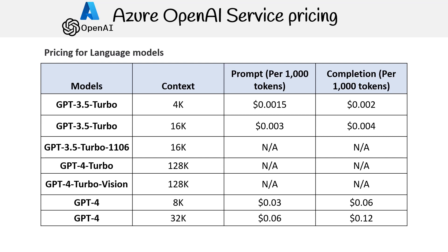GPT-3.5 Turbo 1106 with a 16k context has no available pricing. GPT-4 Turbo and GPT-4 Turbo Vision both have an even larger context size of 128k tokens but also have no listed prices.